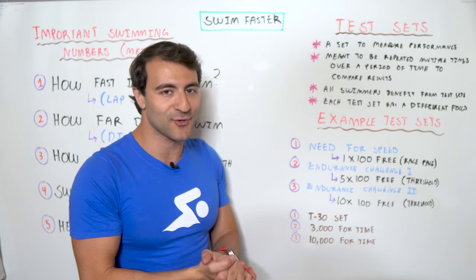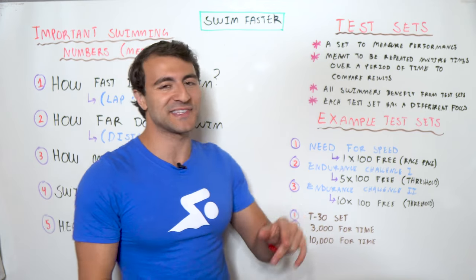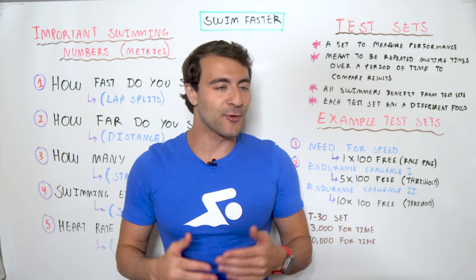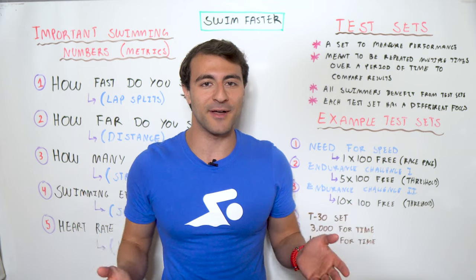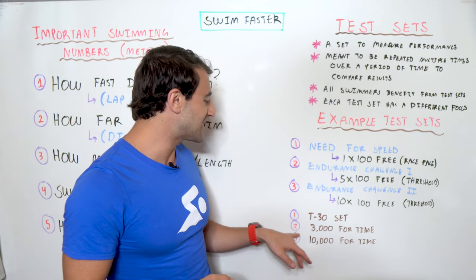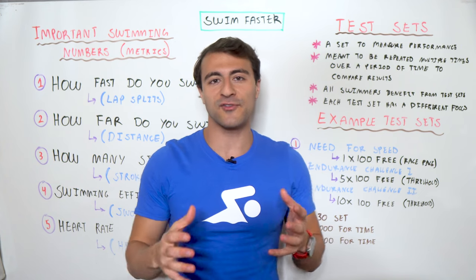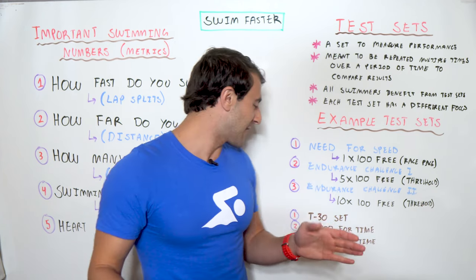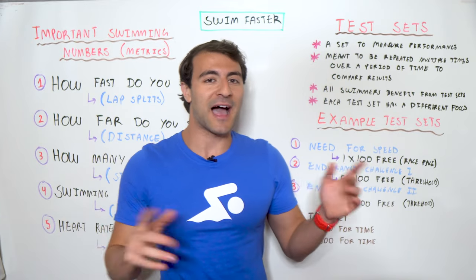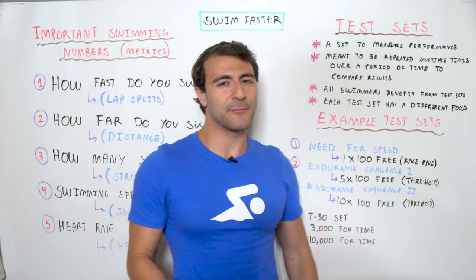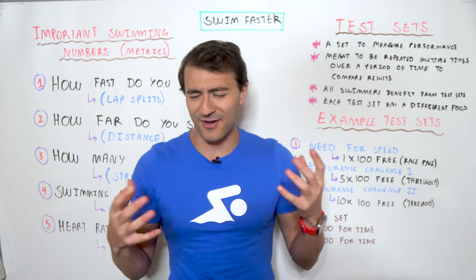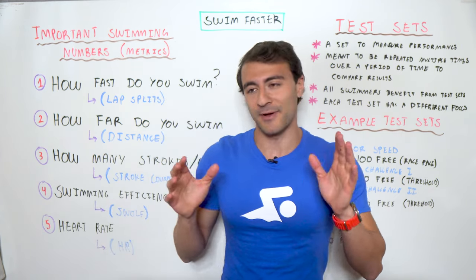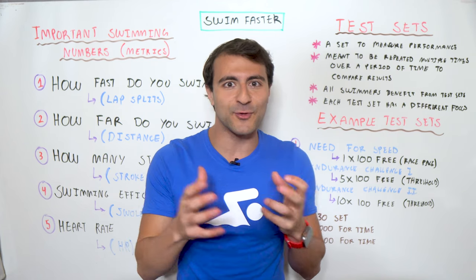A few other test sets not currently in MySwimPro: the T30 set, where you swim for 30 minutes and see how far you go, done once a month to track improvement. There's also a 3,000-meter time trial — my whole workout was 2,000 yards, so imagine doing 3,000 for time. I've heard Michael Phelps has done a 10,000-meter time trial in around 1 hour 55 minutes — incredible to swim for nearly two hours at that speed.